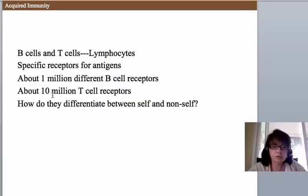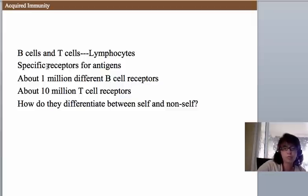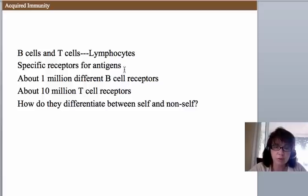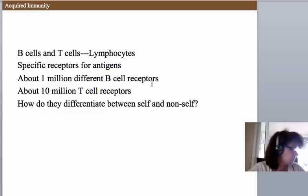The different thing about B cells and T cells compared to our macrophages, dendritic cells, natural killer cells, and neutrophils is that they will only do their job against a very specific pathogen — not just any old virus. A B cell receptor is very specific for a special antigen. We have at least a million different B cell receptors, and your B cell receptor will actually become the secreted antibody. You also have about 10 million different T cell receptors.